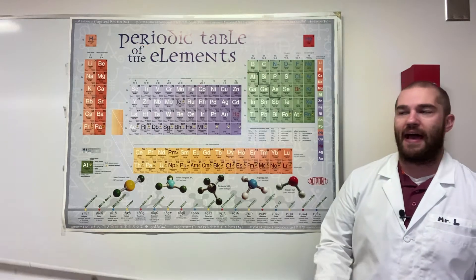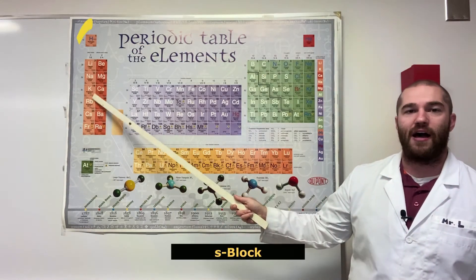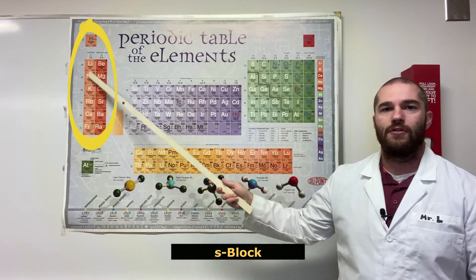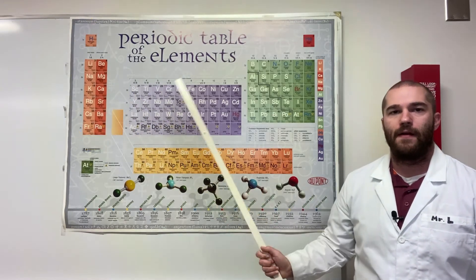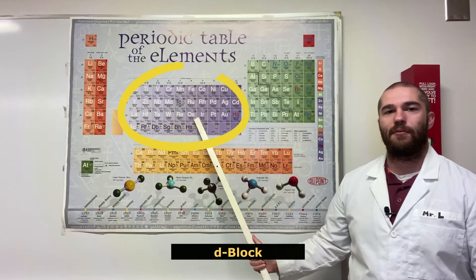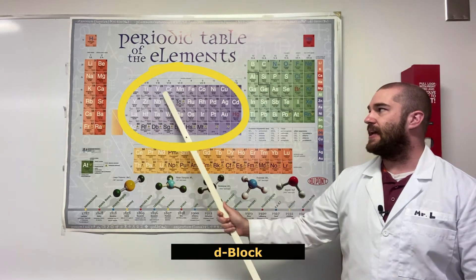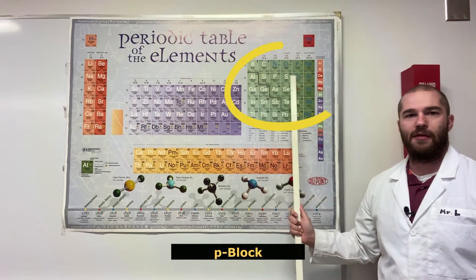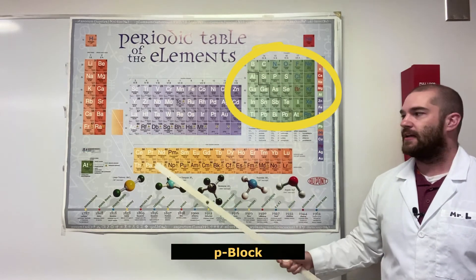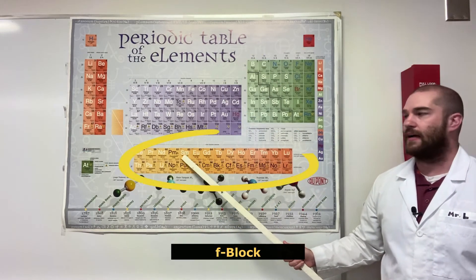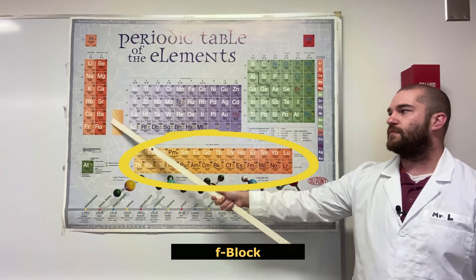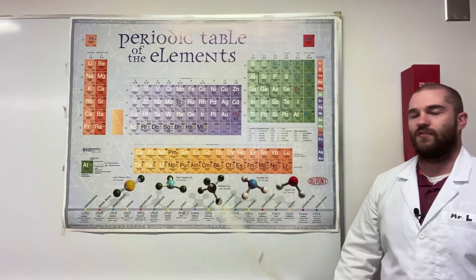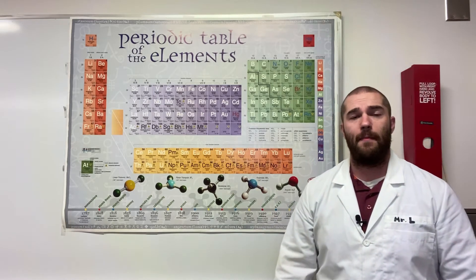But the four blocks that we have: we have the S block, which is two groups wide. In the middle here, we've got the D block, and the D block has 10 elements across. We've got the P block here, which has six elements across. And finally, we have the F block, which fits between the S and the D block and is 14 elements across. So this is going to be a pattern.